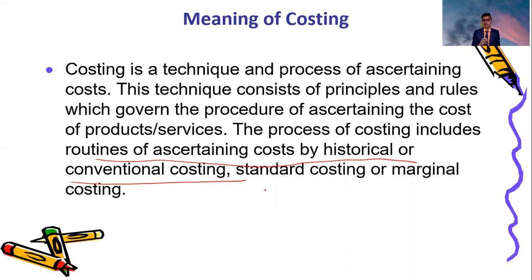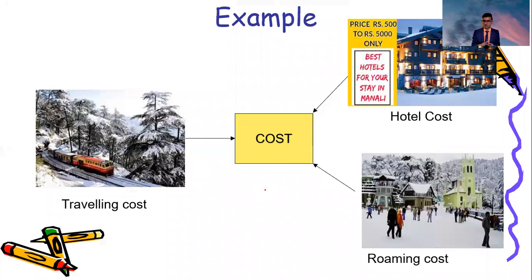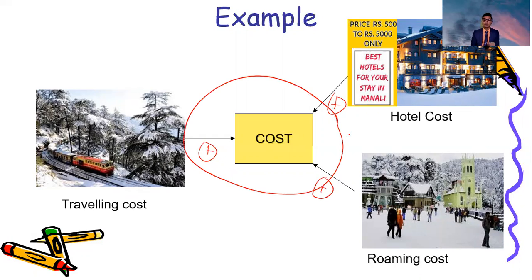Costing is a technique and process of identifying and ascertaining cost. Various principles are used. I will give you an example from our last video. When I asked you about cost, you started adding everything together. The process of adding is called costing — we have aggregated things.